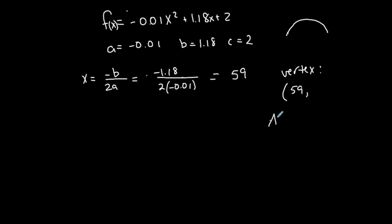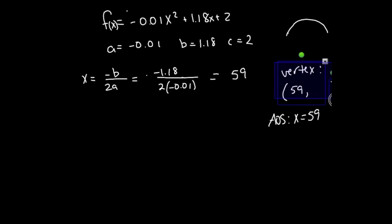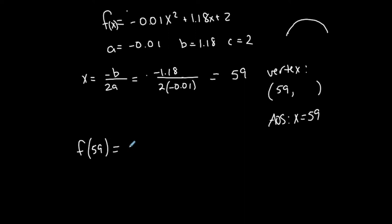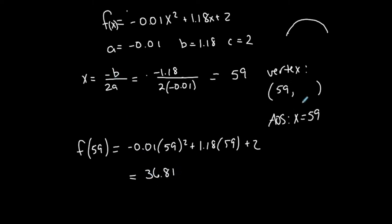I also just determined my axis of symmetry equation, because the axis of symmetry is a vertical line that goes through the vertex. So the axis of symmetry equation is x equals the x-coordinate of the vertex. Once I know the x-coordinate, it's easy to find the y-coordinate — anytime you know x, you plug it in to find y. So I'm going to plug 59 into my function: negative 0.01 times 59 squared plus 1.18 times 59 plus 2. I get 36.81. So my vertex is (59, 36.81).